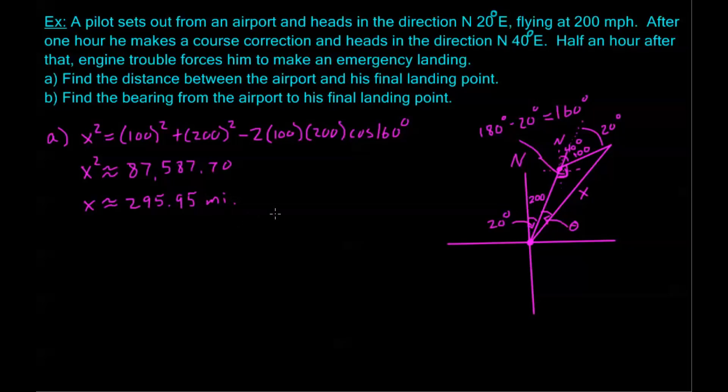But let's just wait a second for that label. So we can take the square root of both sides. We get that x is about equal to 295.95 miles. Now of course, we can just take the positive square root. I don't need to worry about plus and minus, because we're talking about total distance. So the distance from the airport here to my final destination here is a total of 295.95 miles. That's part A.